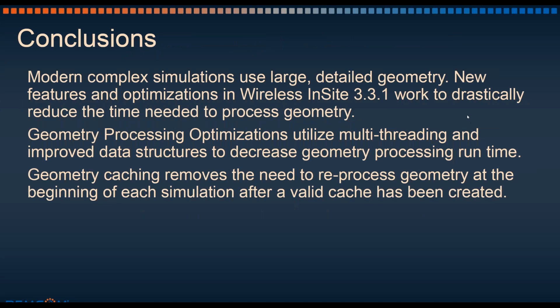To wrap up what was covered, modern complex simulations use large detailed geometry. New features and optimizations in Wireless InSite 3.3.1 work to drastically reduce the runtime needed to process geometry. Geometry processing optimizations utilize multi-threading and improved data structures to decrease the overall geometry processing runtime, while geometry caching removes the need to reprocess geometry at the beginning of every simulation provided a valid cache has already been created.